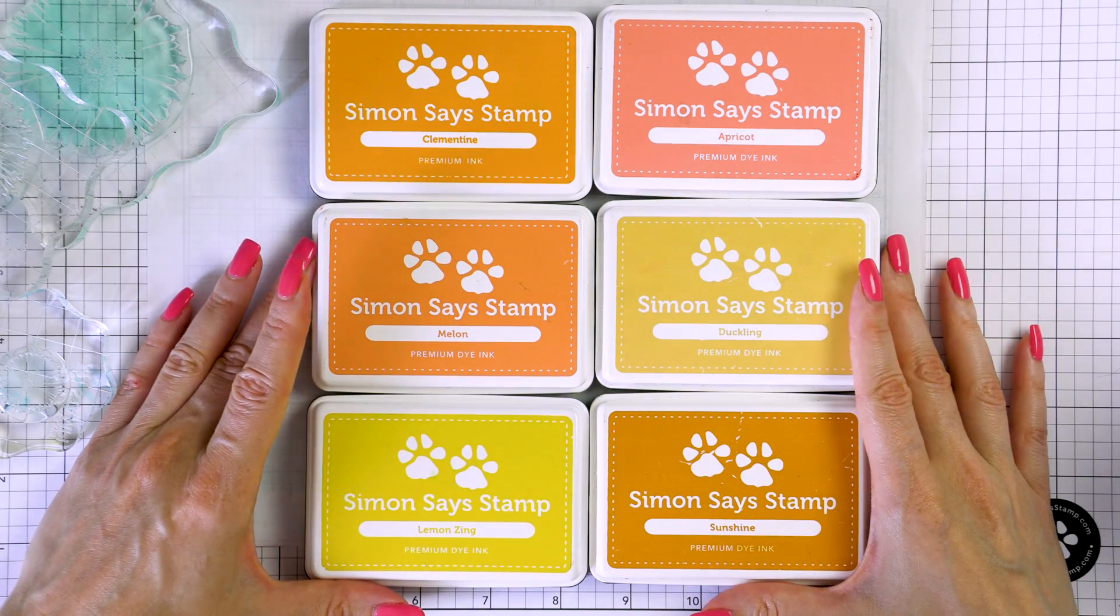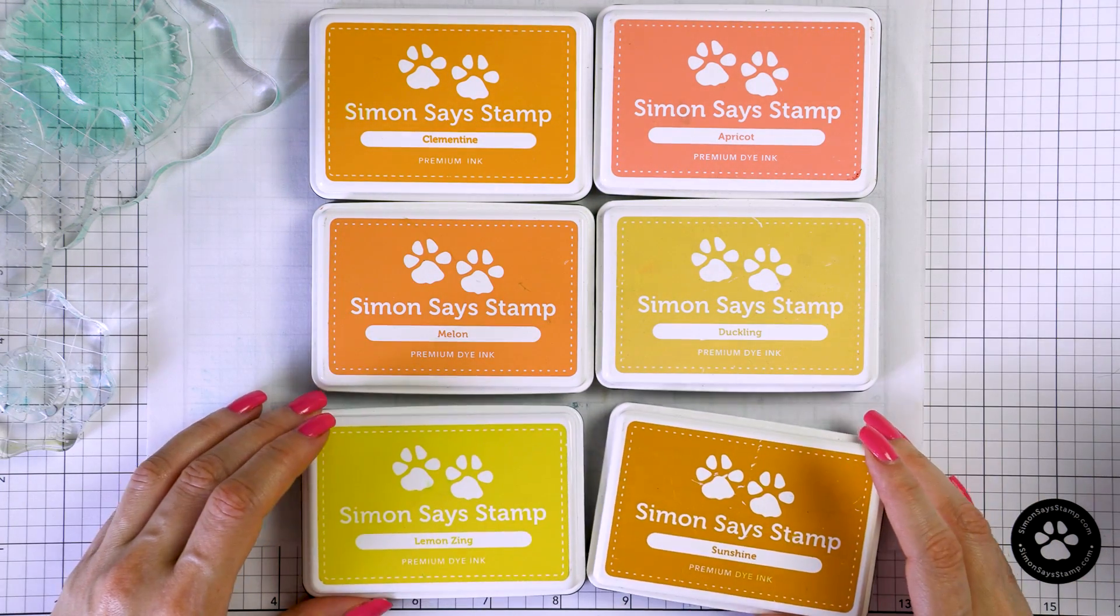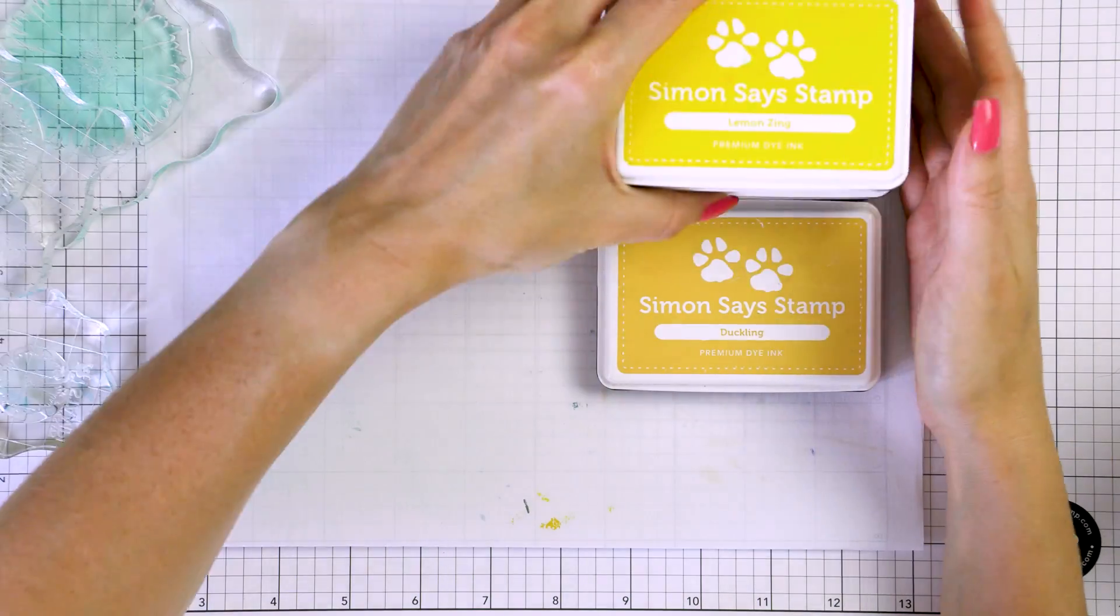The ink colors I picked are sunshine, duckling, apricot, clementine, melon and lemon zing.